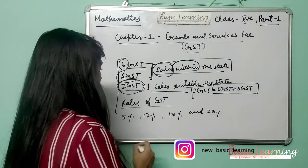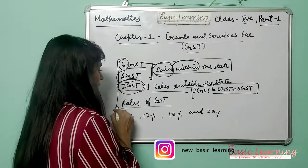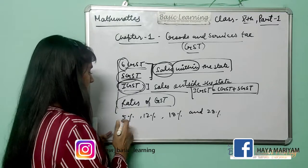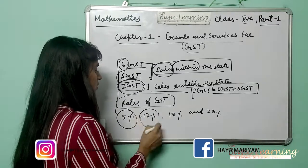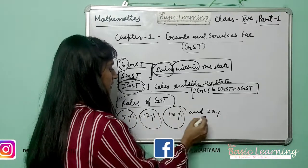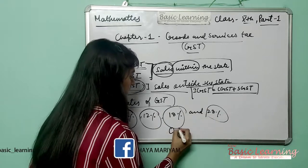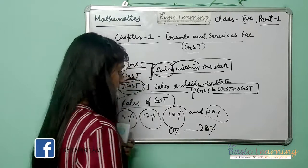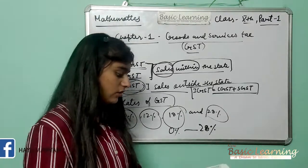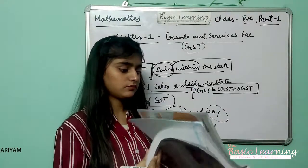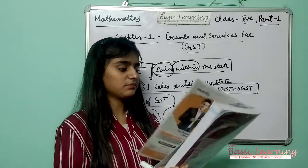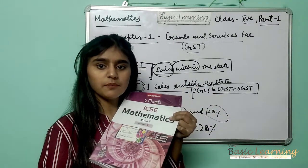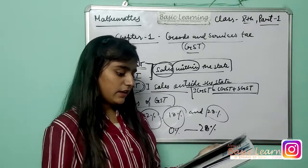The rates of GST are of four types: 5%, 12%, 18%, and 28% — that is, ranging from 0% to 28%. Now this is the book S.C. Mathematics, written by O.P. Malhotra, S.K. Gupta, and Anubhuti Gangal. So this is the first chapter — now let's see the questions related to this chapter.